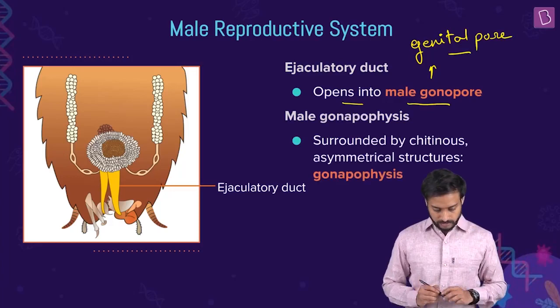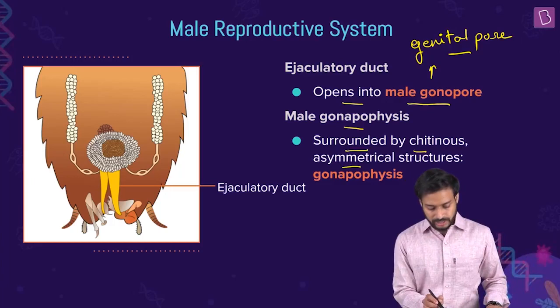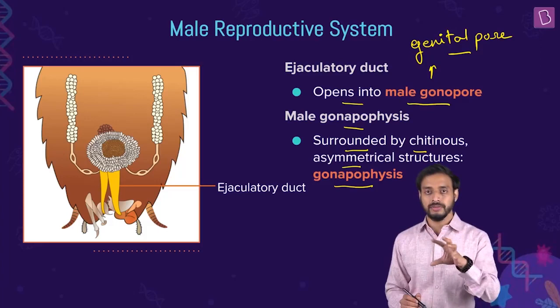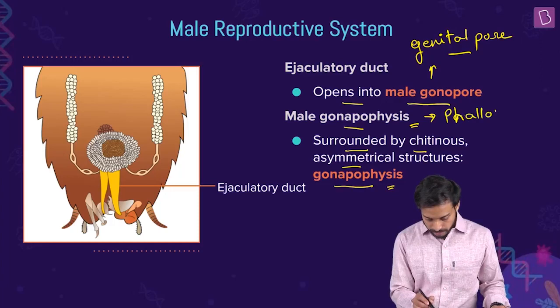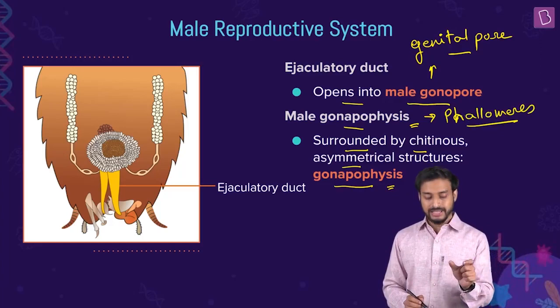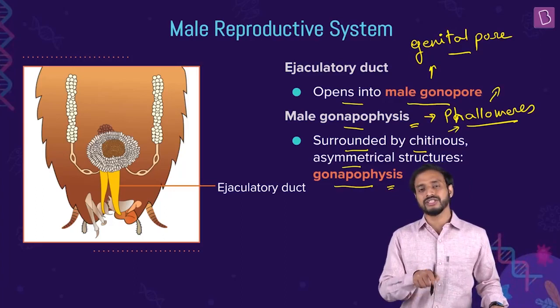The ejaculatory duct opens into the male gonopore — gonopore means genital pore. Now, the male gonapophysis are chitinous, asymmetrical structures. They are also called phallomeres. Questions can be asked referring to them as either male gonapophysis or phallomeres, so be aware of both terms.